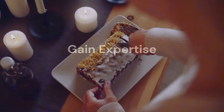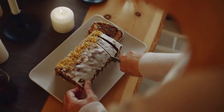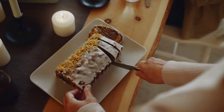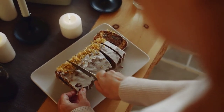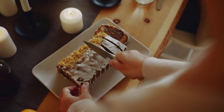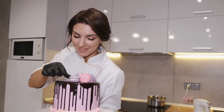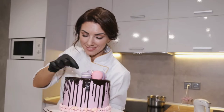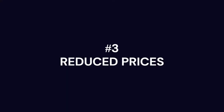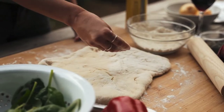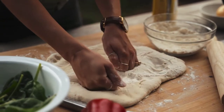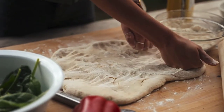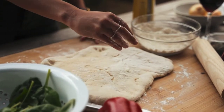The second advantage is gaining expertise. When you do something again and again, you gain a certain level of expertise at it, and that's what happens in division of labour — a limited number of tasks means better productivity and better quality. The third advantage of division of labour is the reduction in prices. When something gets done cheaper and faster, the manufacturers can afford to reduce their prices.